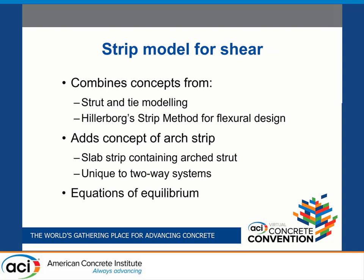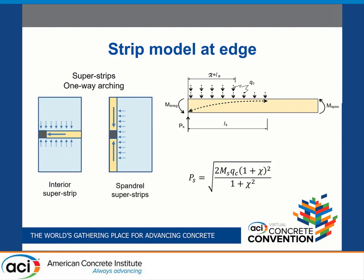The method being used is a strip model, which is an exercise in describing viable load paths. We're not trying to describe a failure mechanism — that makes it quite different from usual approaches for design of slab-column connections. We have the notion of an arch strip. One illustrated is an interior strip that gets loaded on both sides, where arching action takes shear into the column and the strip is loaded on its side faces.